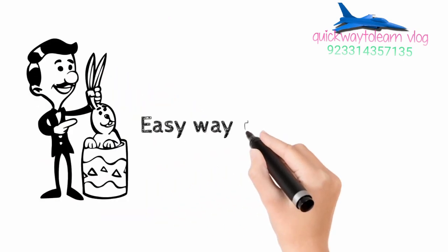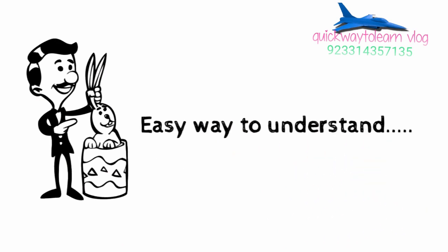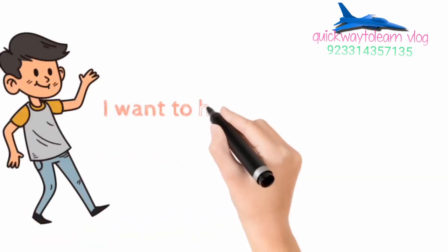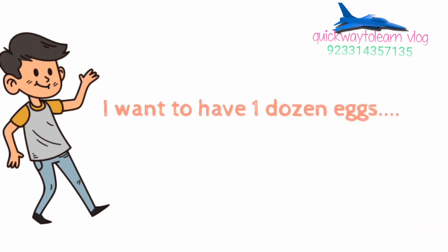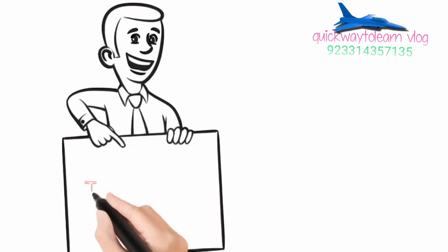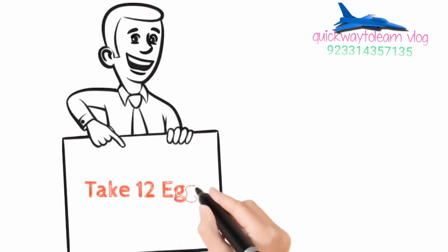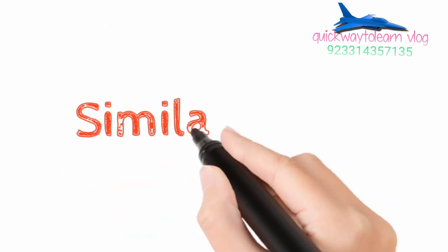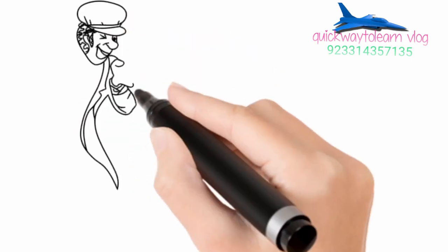The easy way to understand the concept of mole is to correlate it with an example. If I want to have one dozen eggs, how many eggs would I take? Of course, 12. So 12 is the number and one dozen is the quantity. Similarly, when we talk about the mole...